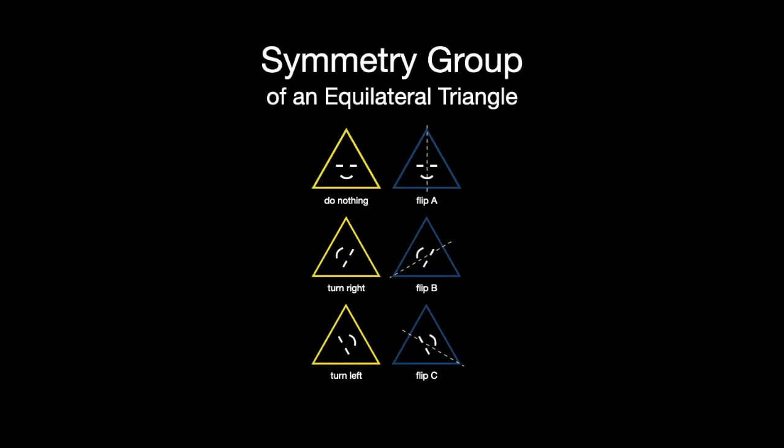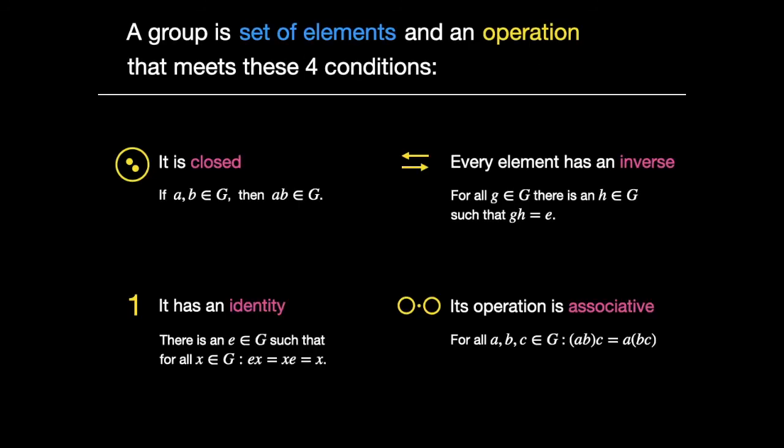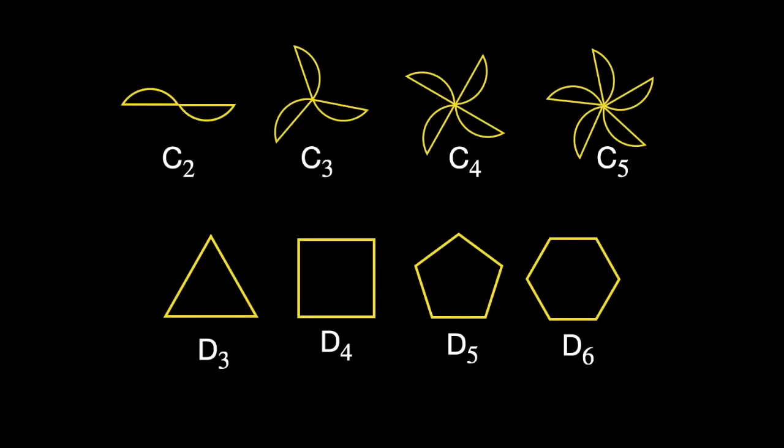To review. In this video, we introduced an example of a group, the symmetry group of an equilateral triangle. We spelled out the definition of a group using this example. And we generalized to a few classes of symmetry groups, noticing that the axioms of the group still held, even in these more general cases.